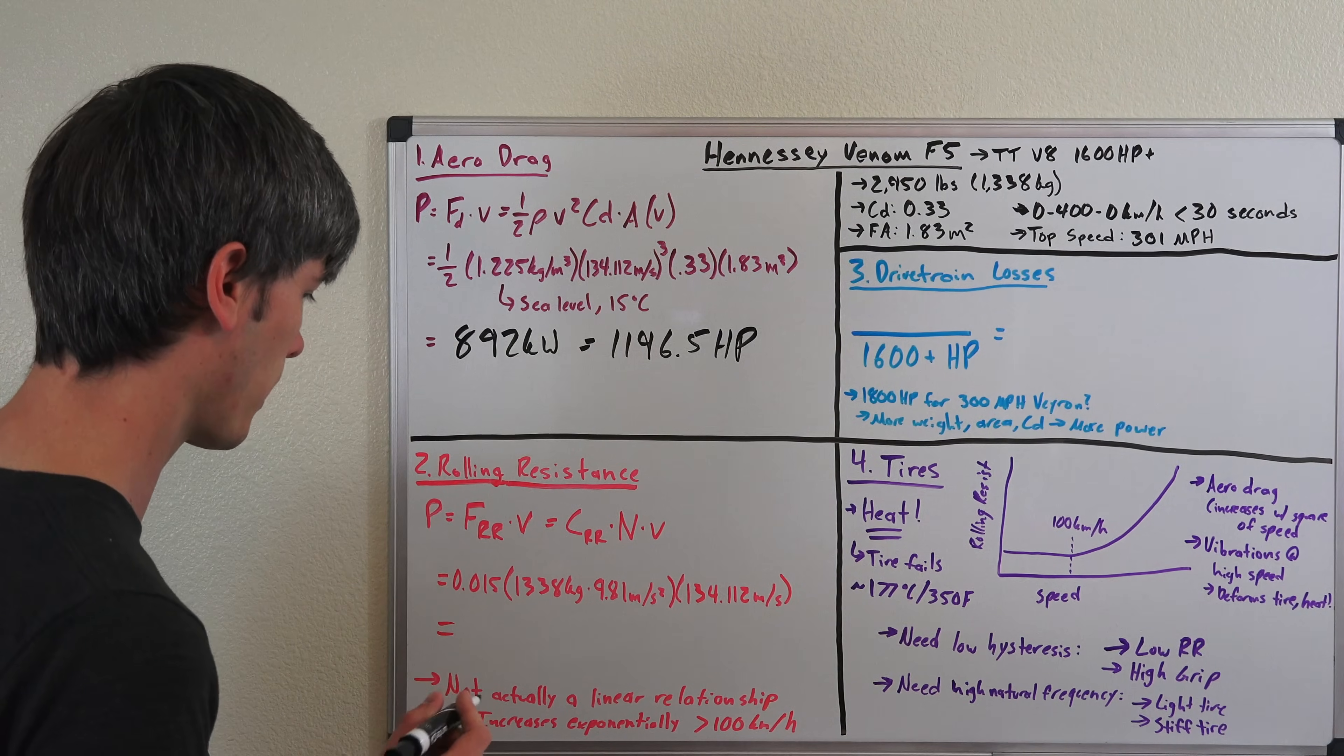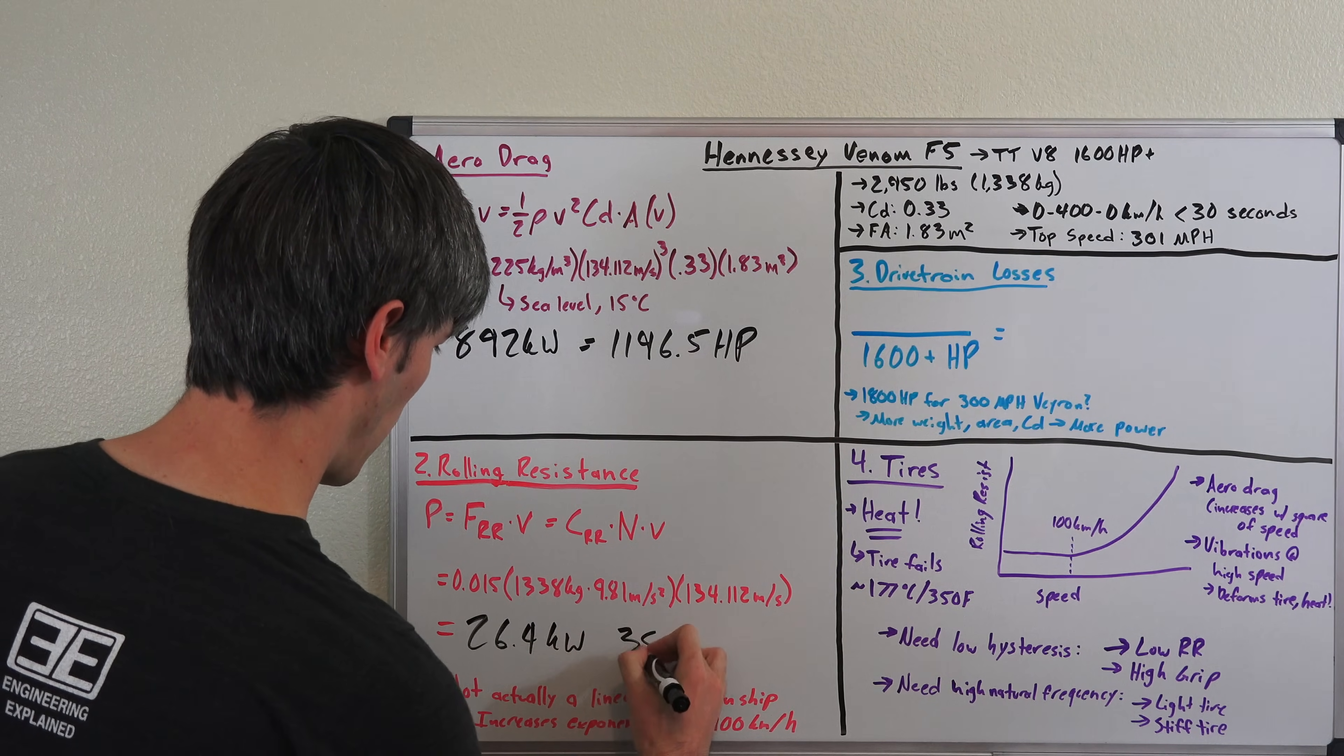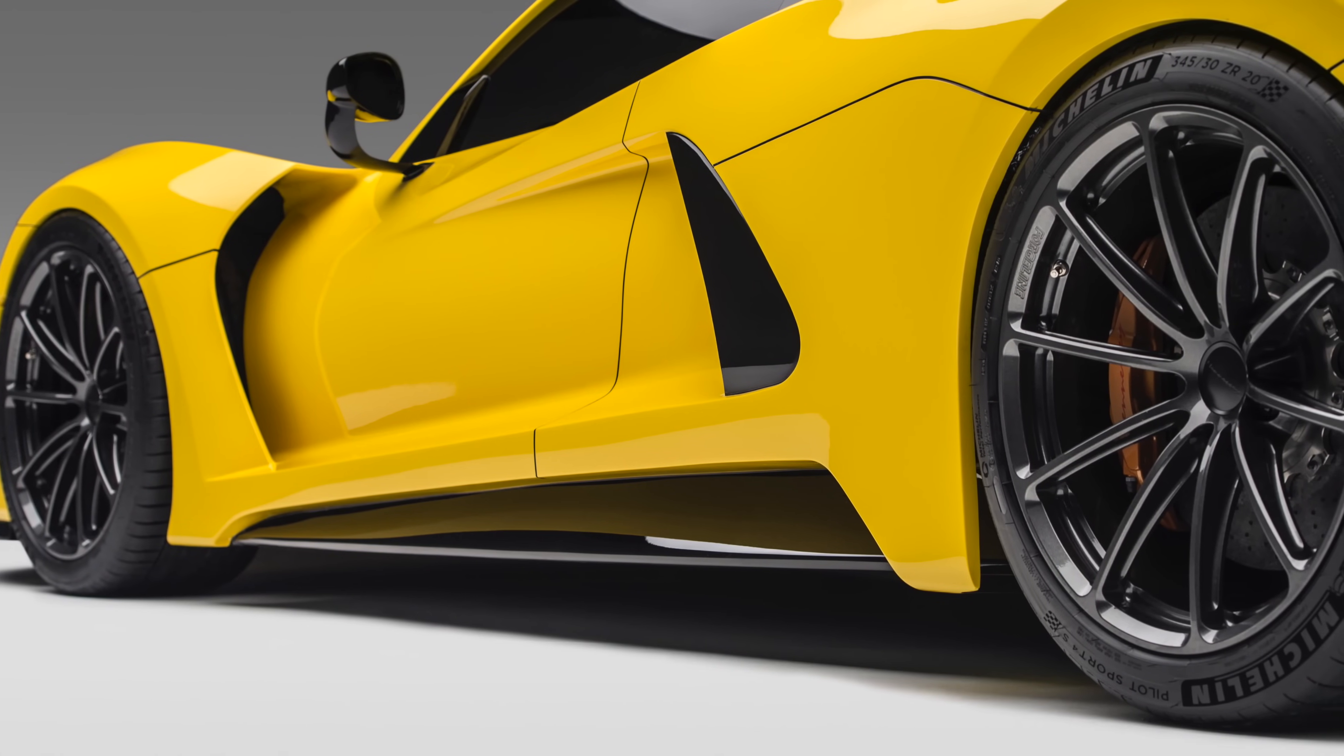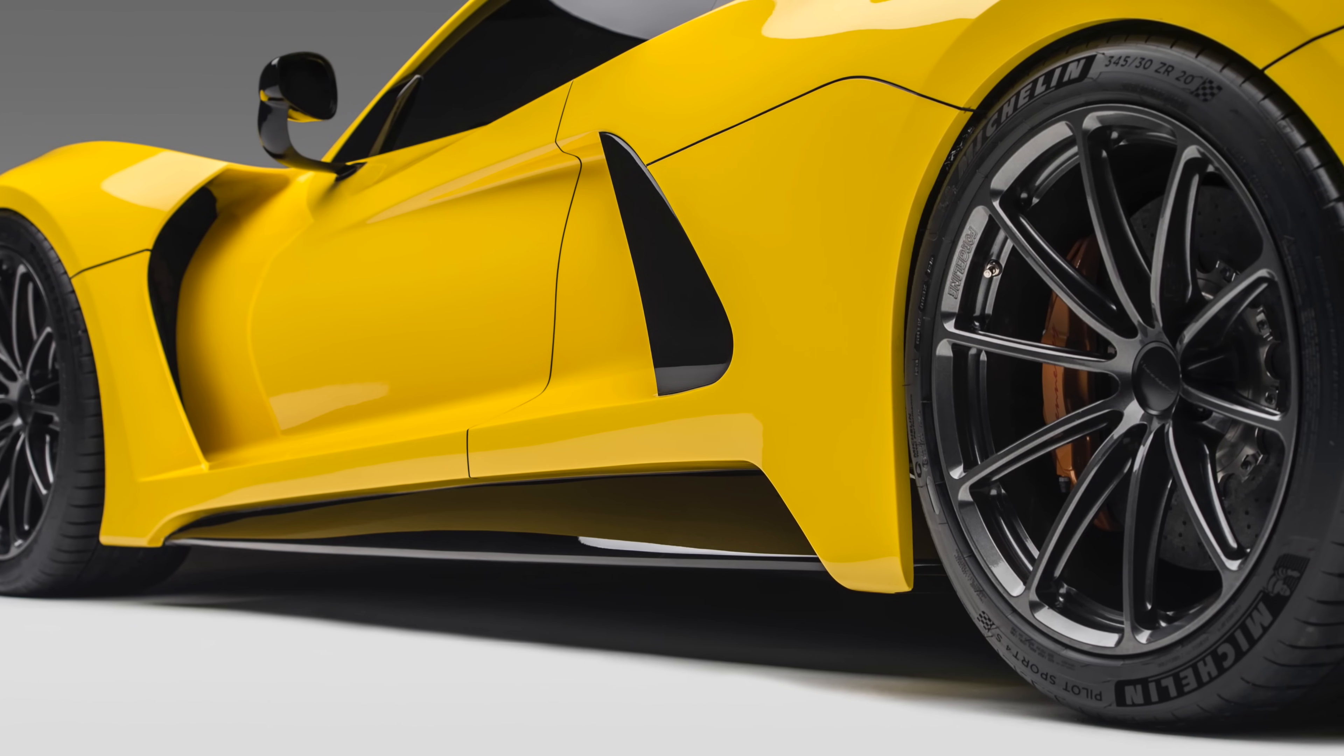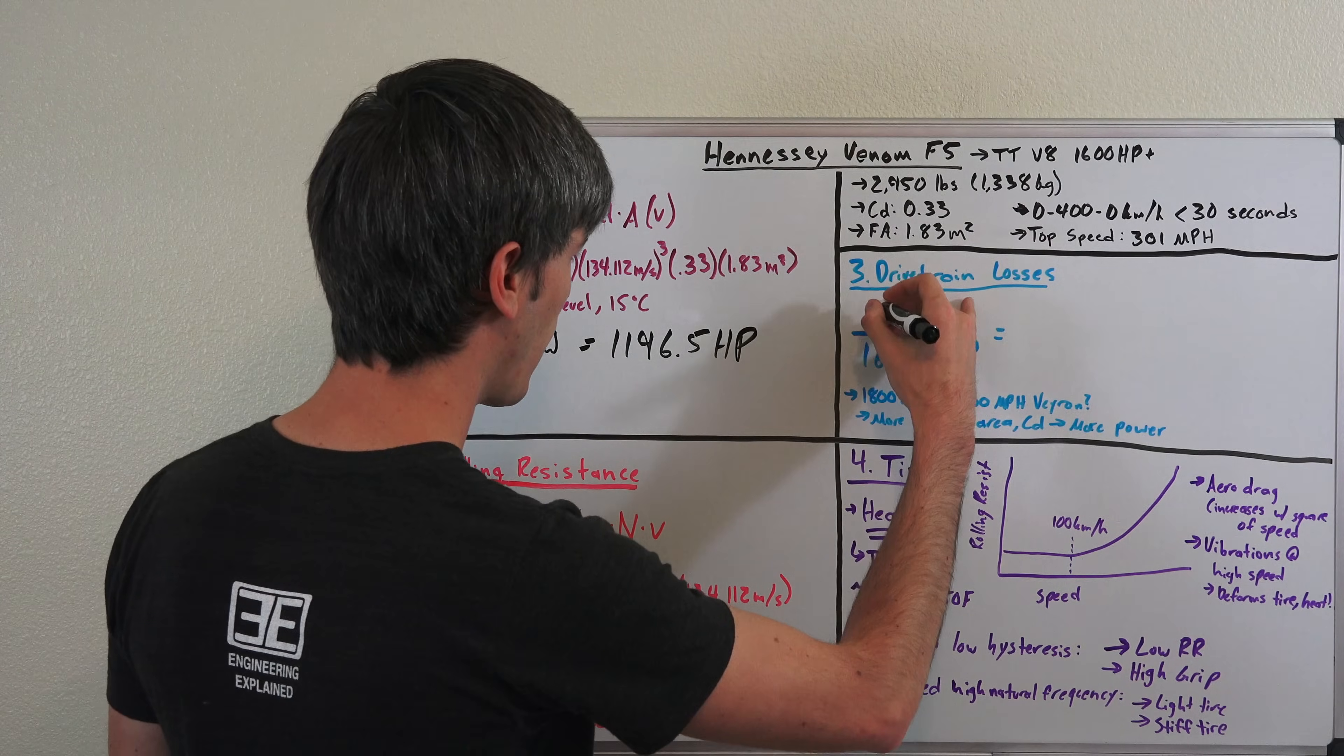You do the math there and that gives you a total of 26.4 kilowatts or about 35.4 horsepower. Now there's not actually a linear relationship between the power to overcome rolling resistance and the velocity at which you're traveling, but we'll get more into that later when we start talking about tires. For now we're going to use this 35.4 horsepower figure.